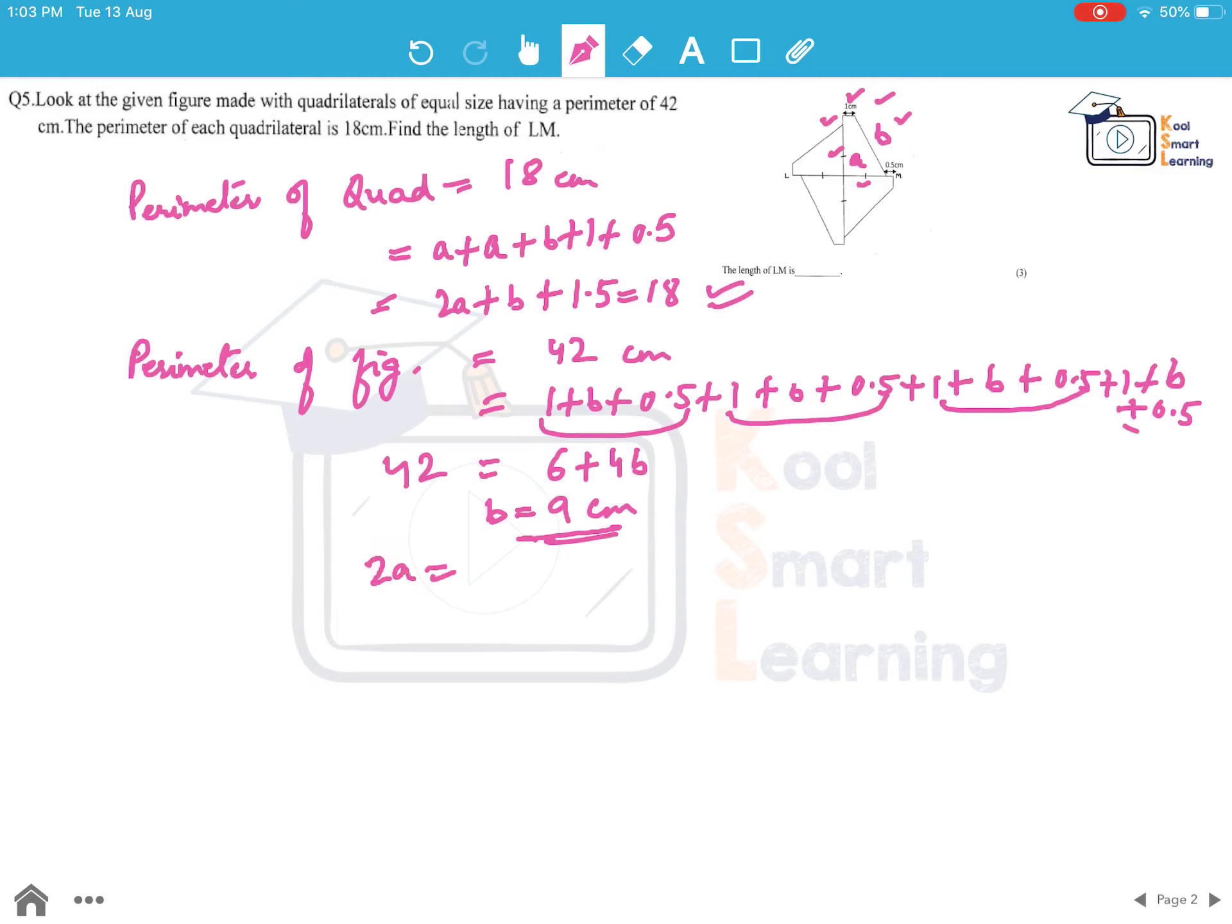So if we know B is 9 cm we can get 2A, we put this value. 2A is equal to 18 minus 10.5 which is 7.5 so A becomes 3.75. Now LM we clearly know is 0.5 plus A plus A plus A plus 0.5 so this is 1 plus 3.75 into 2 so this gives us 8.5 cm, so this is the length of LM.